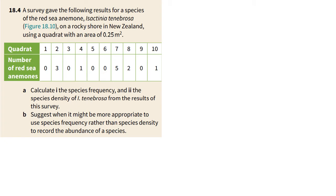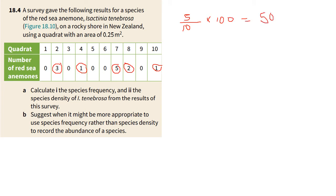This is an example from the textbook. It's not a worked example — it's actually a question posted there for students to walk through. It says a survey gave the following results for a species of Red Sea animal on a rocky shore in New Zealand using a quadrat with an area of 0.25 square meters. To calculate species frequency, you count the number of occurrences of that species — within these 10 quadrats, how many times does the species occur? So that's one, two, three, four, five — it occurs five times. You divide that by the total number of quadrats, which is 10, and you multiply by 100, which gives you 50%. So the frequency is always represented as a percentage.